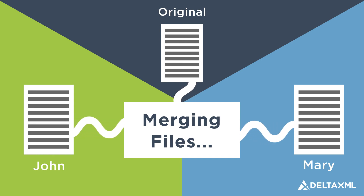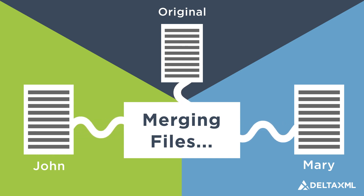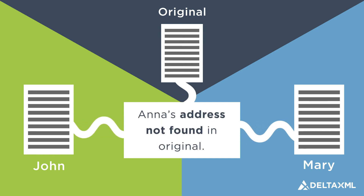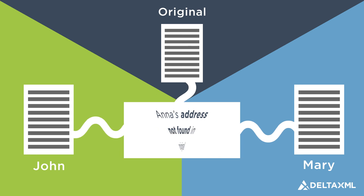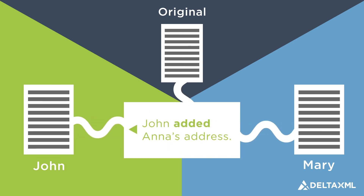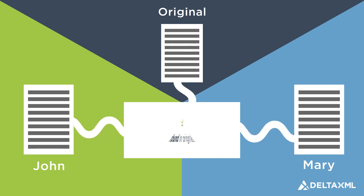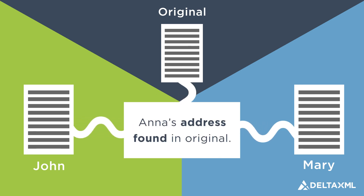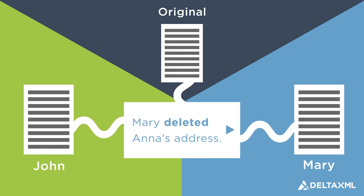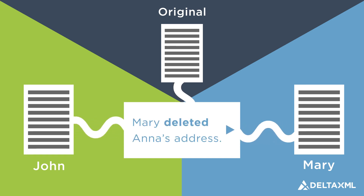So we can only find out what really happened if we have access to the original address file. If Anna's address is not there, then we can be sure that John has added it. But if Anna's address is there, then we know that Mary has deleted it.